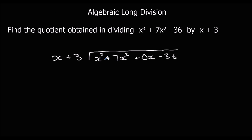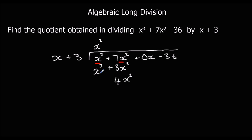First step: x cubed divided by x gives x squared. Multiply x squared by both terms: x squared times x is x cubed, x squared times 3 is 3x squared. Subtract: x cubed minus x cubed is nothing, and 7x squared minus 3x squared gives us 4x squared. Bring down the next terms.